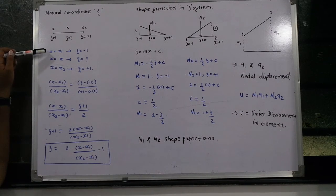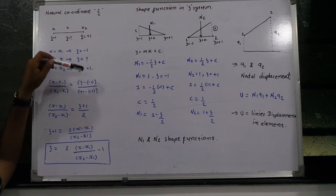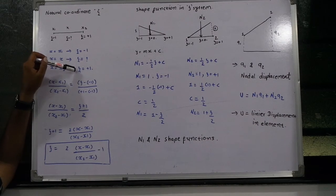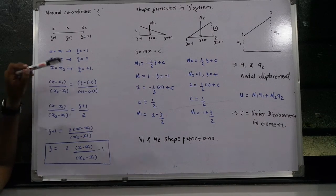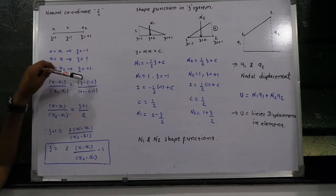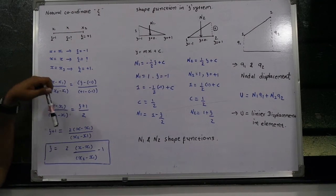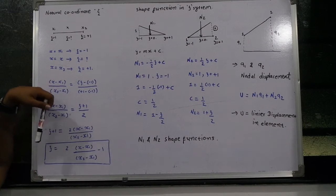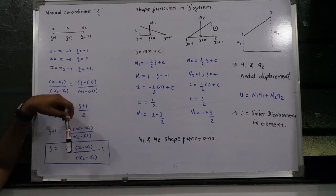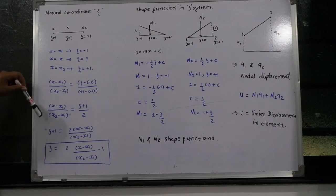Taking the difference between the first and second terms in the numerator and the first and third terms in the denominator: (x minus x1) over (x2 minus x1) equals (zeta minus (minus 1)) over (1 minus (minus 1)), which gives (zeta plus 1) divided by 2. From this equation, solving for zeta: zeta plus 1 equals 2*(x minus x1)/(x2 minus x1), so ultimately zeta equals 2*(x minus x1)/(x2 minus x1) minus 1. This is the natural coordinate system used in finite element analysis.